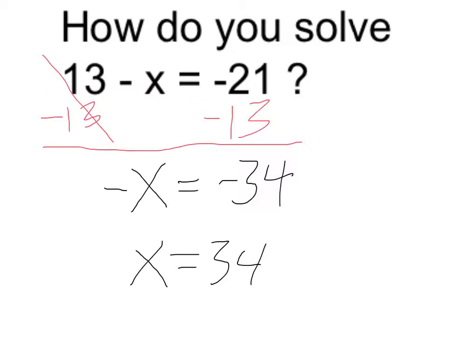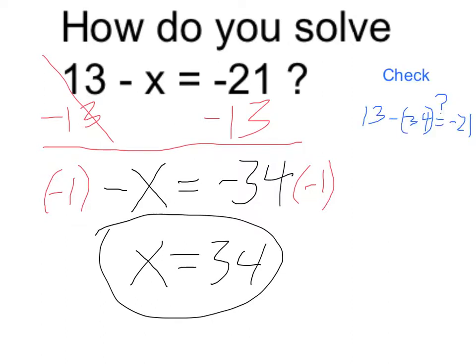Another way to think about it is to get the x alone rather than a negative x, what I can do at this step above is multiply both sides by negative 1. But in either case, you can see that results in x being equal to 34.